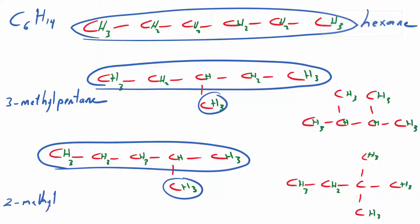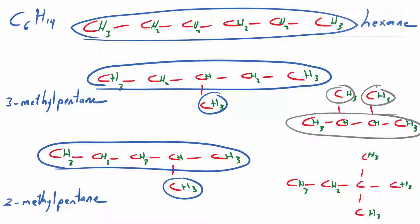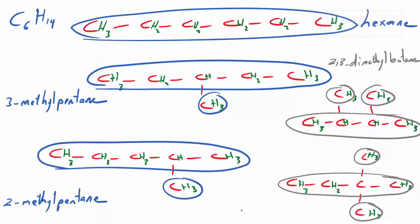That one is called 2-methylpentane. The next structure has four carbons in sequence as the longest chain, with two methyl groups at two different carbons — the second and third — so it's called 2,3-dimethylbutane. The last one has both methyl branches coming from the same carbon, so we write it as 2,2-dimethylbutane, since the longest chain is again four carbon atoms. These are all the possible isomers of C6H14.